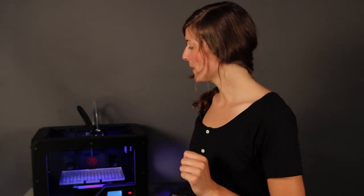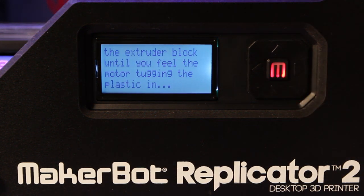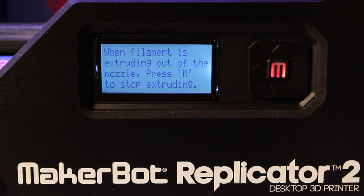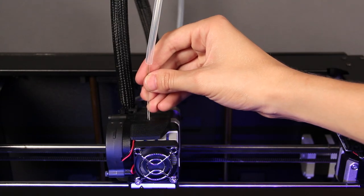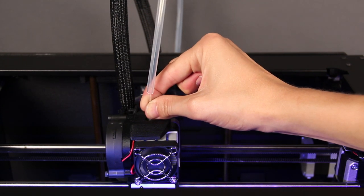Once your extruder has reached the correct temperature, your MakerBot Replicator 2 desktop 3D printer will ask you to load the filament. Click through the message until your MakerBot Replicator 2 asks you to press the M when you see plastic extruding. Take the end of the filament itself and push it right into the hole in the top of the extruder.